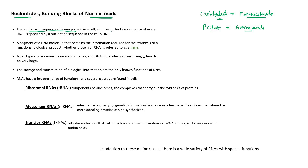The amino acid sequence of every protein in a cell, and the nucleotide sequence of every RNA, is specified by the nucleotide sequence in the cell's DNA. DNA makes RNA, and RNA makes protein. The process by which DNA makes RNA is called transcription, and the process by which RNA makes protein is called translation.